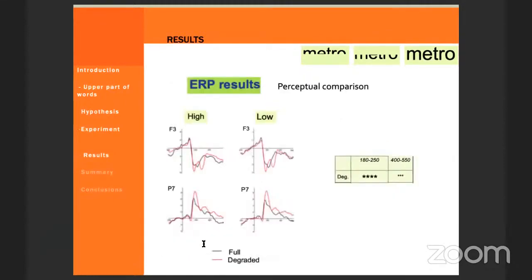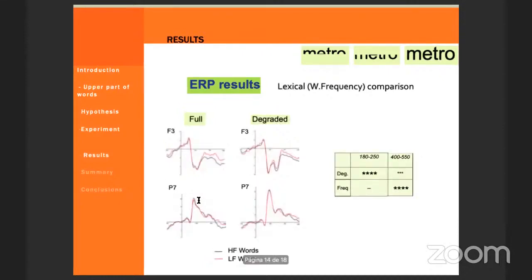For the ERP results, we have the perceptual comparisons here, and you can see the shape of the waves for both the full and degraded condition, and it was very clear that the difference started very early in the N170. And for the lexical frequency comparison, the effect started later, in an eighth time window.